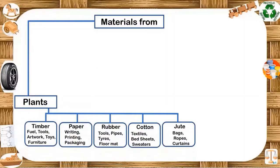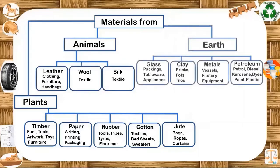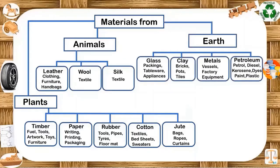Materials from plants: timber, paper, rubber, cotton, jute. Materials from animals: leather, wool and silk. Materials from the earth: glass, clay, metal and petroleum.